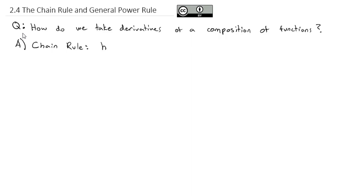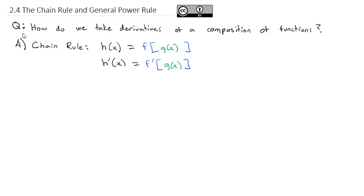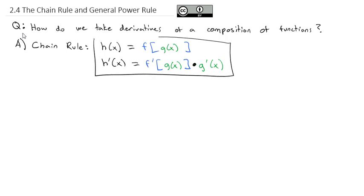The idea of the chain rule is we have some function h of x that is made up of a composition of functions. It has an outside function — we're going to call it f — and inside it is some other function, g of x. The way we calculate the derivative of this composition of functions is we first take the derivative of the outside function, where the inside stays exactly the same, and then we multiply by the derivative of the inside function. This is going to become our chain rule. You should become very familiar with it, just like your product rule, quotient rule, and exponent rule.